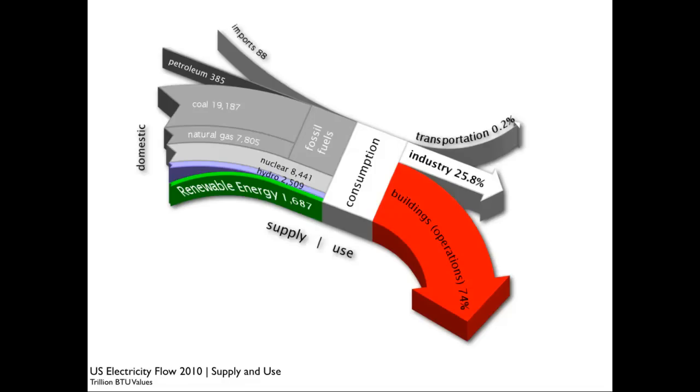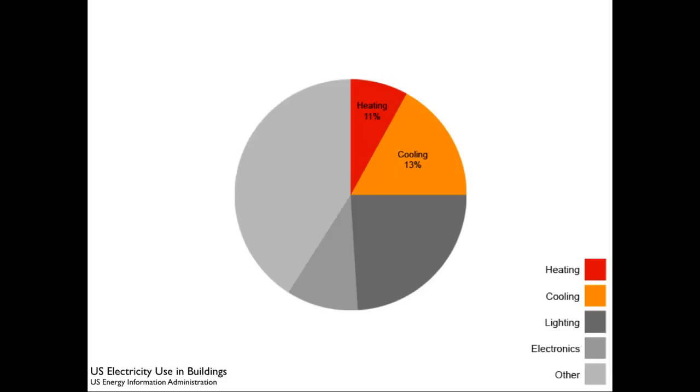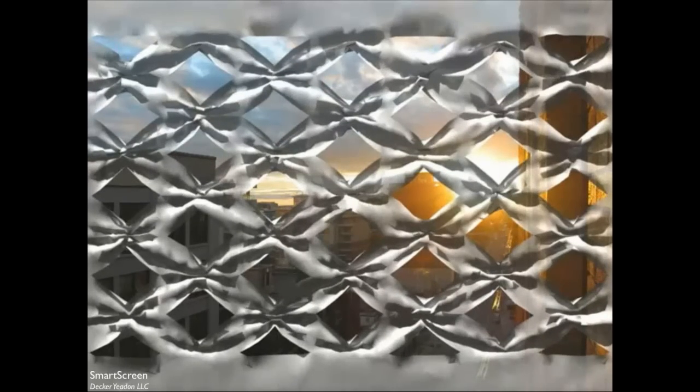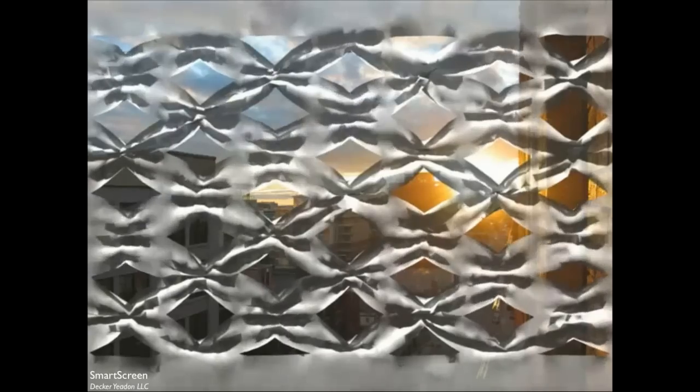It gets more dire when we look at electricity in particular. Fossil fuels are still the main source of our electricity, and 74% of the electricity that we produce is used in buildings and for their operations. If I dissect that a little bit more in architecture, heating and cooling roughly makes a quarter of that. And this is really where, in my office, we try to tackle this, the first problem with our research.